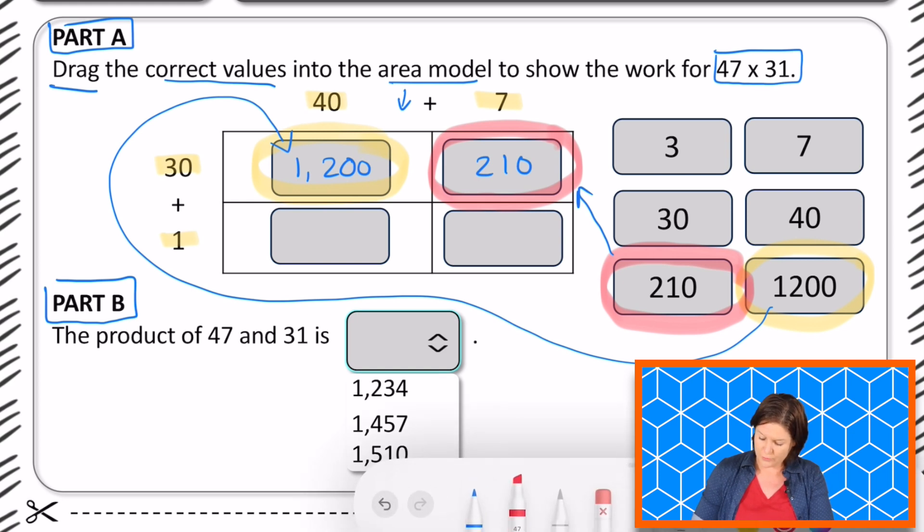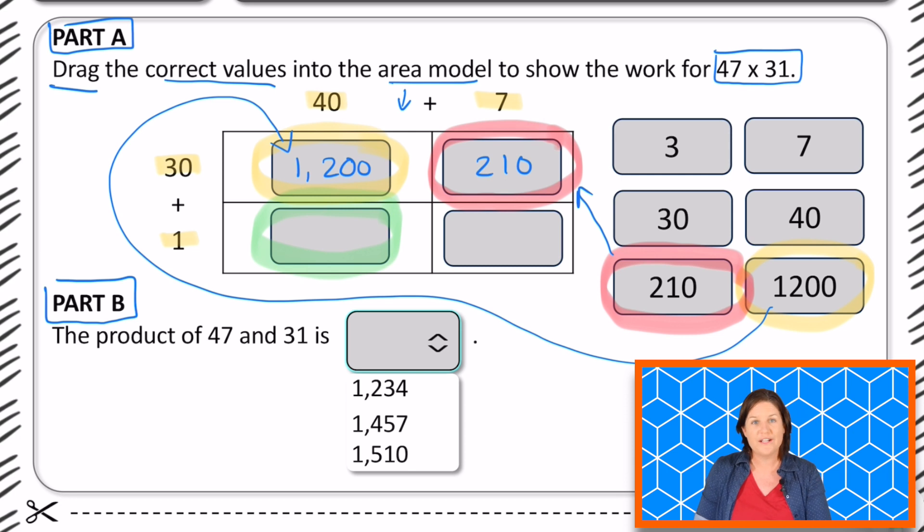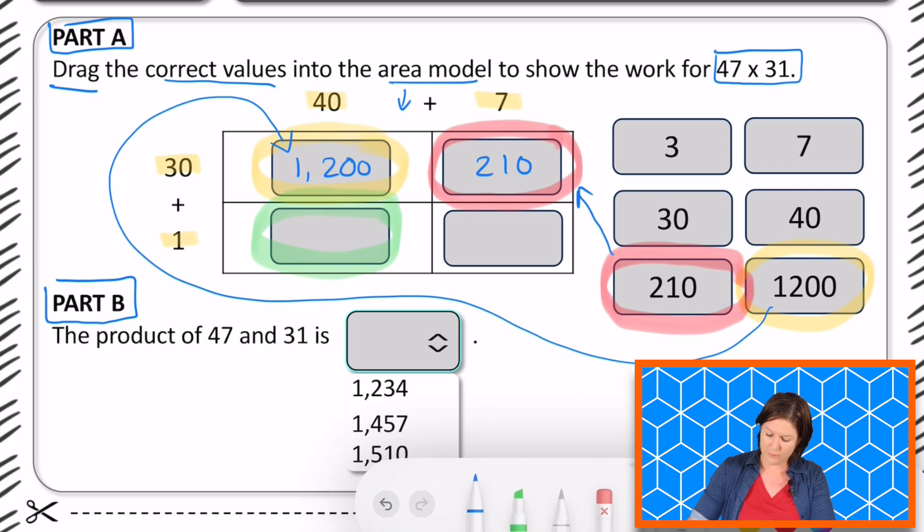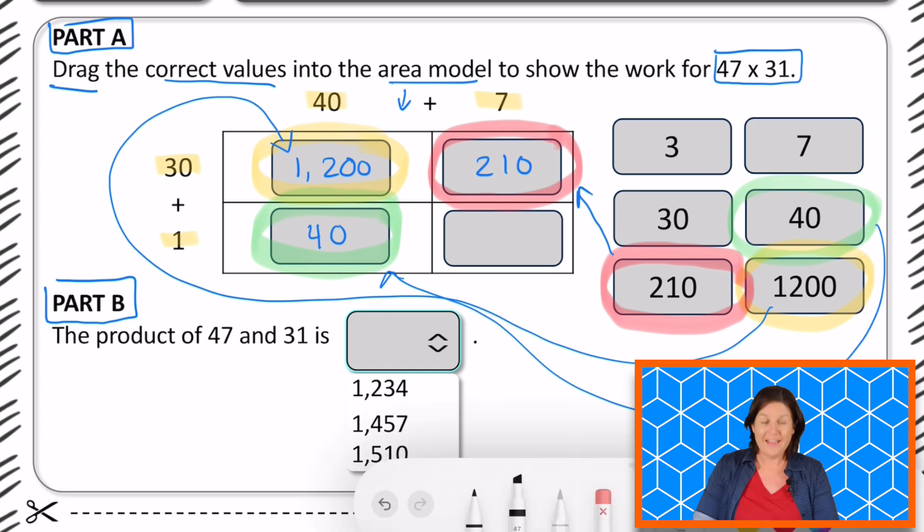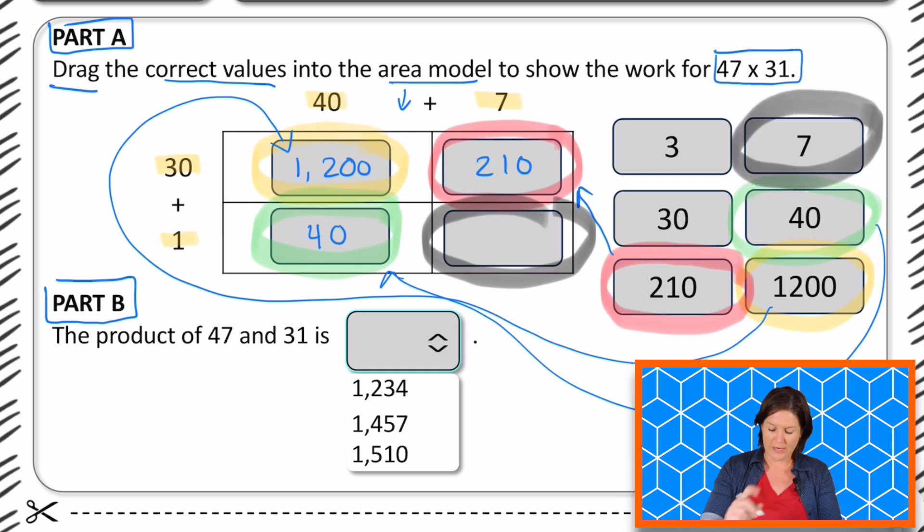Okay. Now let's move on to this one down here. That would be 40 times 1 or 1 times 40, which is what? 40. So we'd grab our 40 and move it in to get 40 right there. And then last but not least, we have 1 times 7 or 7 times 1, which is 7. So we would take this 7, click on it and drag it to where it needs to go. There we go.